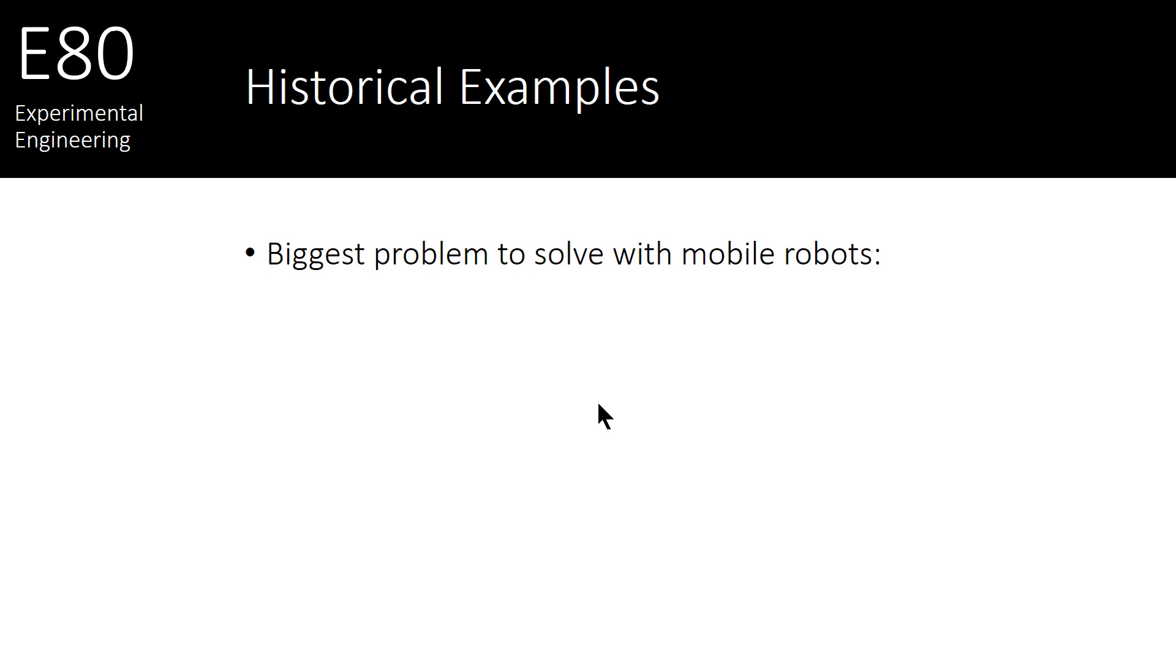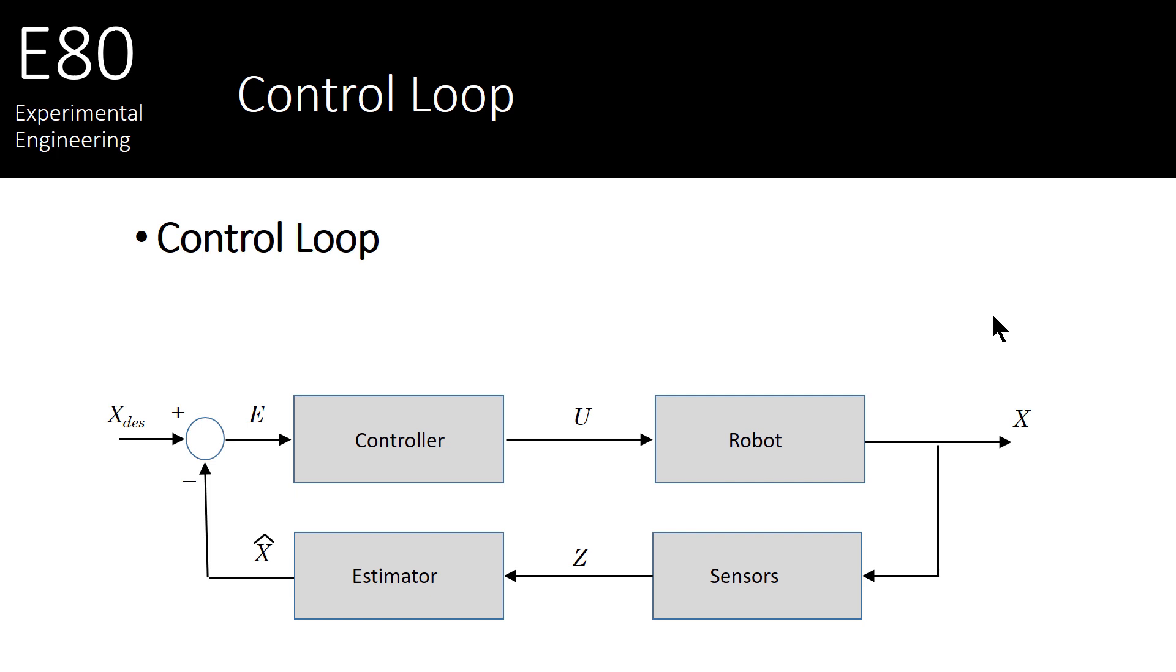The biggest problem that's been worked on for the last 10, 20, and even 30 years is answering the question for the robot: where am I? As we went from manipulator robots to mobile robots, we needed to solve this problem or answer this question, where am I? For robots to really take advantage of their mobility, they need to know where they are in the world.